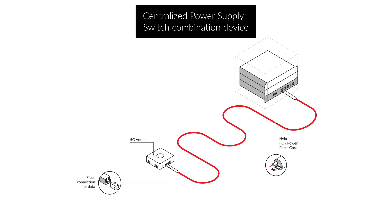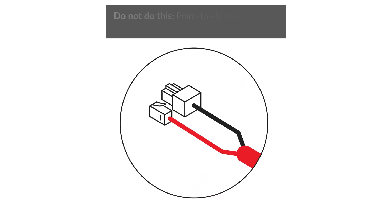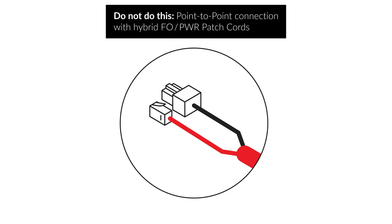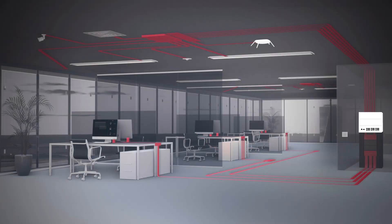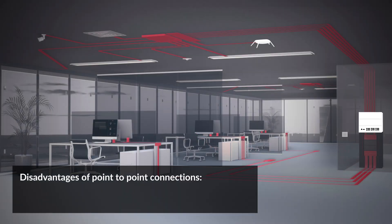RJ45 connections are often used to provide PoE-style power. Using the RJ45 connection for plug-and-play usage, many device manufacturers propose a solution with a point-to-point cable assembly with LC duplex and RJ45 plugs at both ends — in essence, an overlong hybrid fiber optic and power patch cord. This solution, however, generates a series of disadvantages.